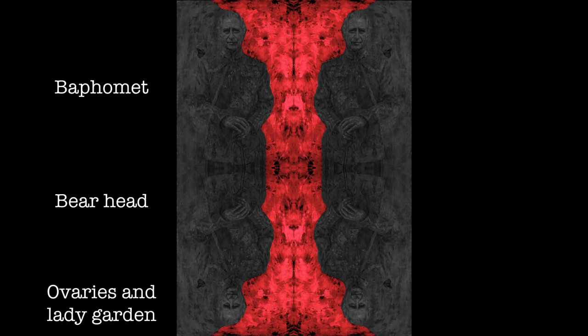If you accentuate that stuff and make Charlie look a little bit more prominent, this looks like a sort of totem pole of demonic forces. You can see Baphomet at the top, just below the halfway line you can see a bear's head, and at the bottom it looks like there's ovaries and a lady garden. There are a few other simulacrums in there as well. You could argue it's just reflections and coincidence, and I would believe that up to a point.